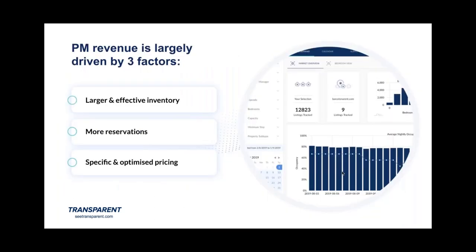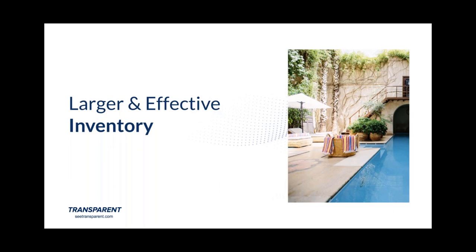We thought it would be great to start 2020 with revenue in mind and show you some ways to get ahead this year. We're breaking this webinar down into three sections: number one, larger and effective inventory; number two, more reservations; and number three, specific and optimized pricing. We want to show you how market intelligence can inform the strategic decisions that impact revenue. By the end of the session, we hope you'll have identified ways data can improve your inventory, occupancy, and rates.